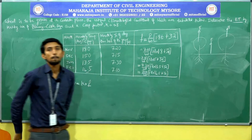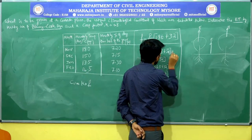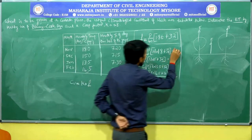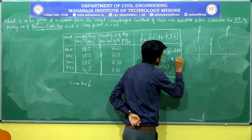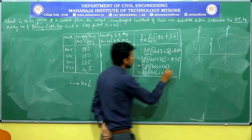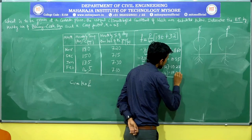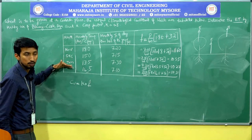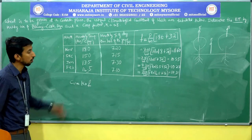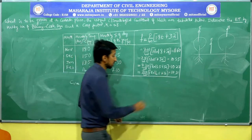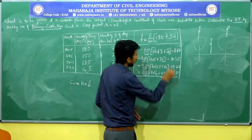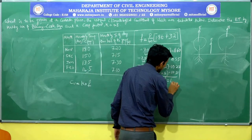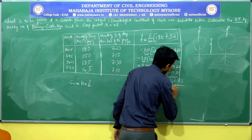The monthly consumptive use factors are: November = 11.60, December = 10.55, January = 10.27, February = 10.31. The summation of all four monthly consumptive use factors gives ΣF = 11.60 + 10.55 + 10.27 + 10.31 = 42.73.